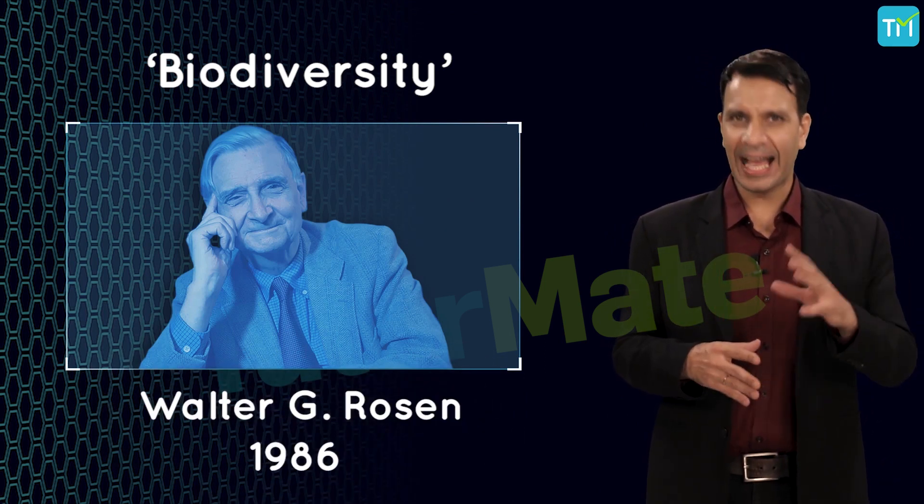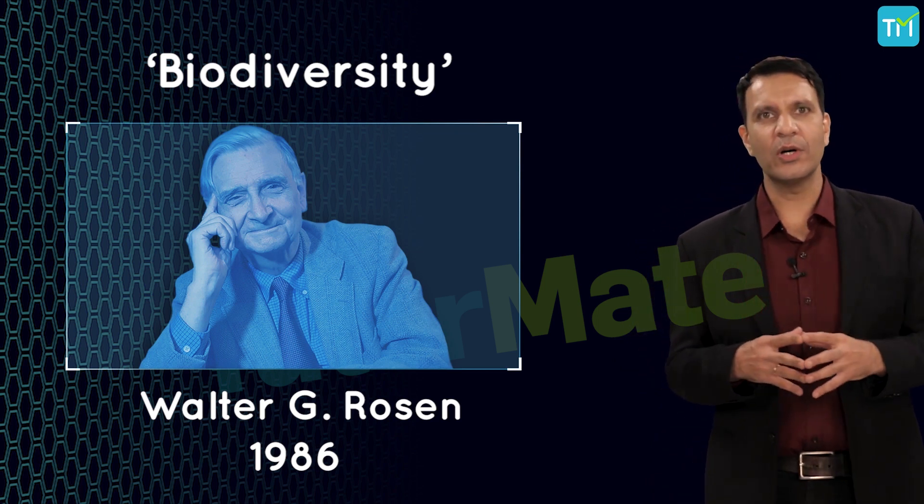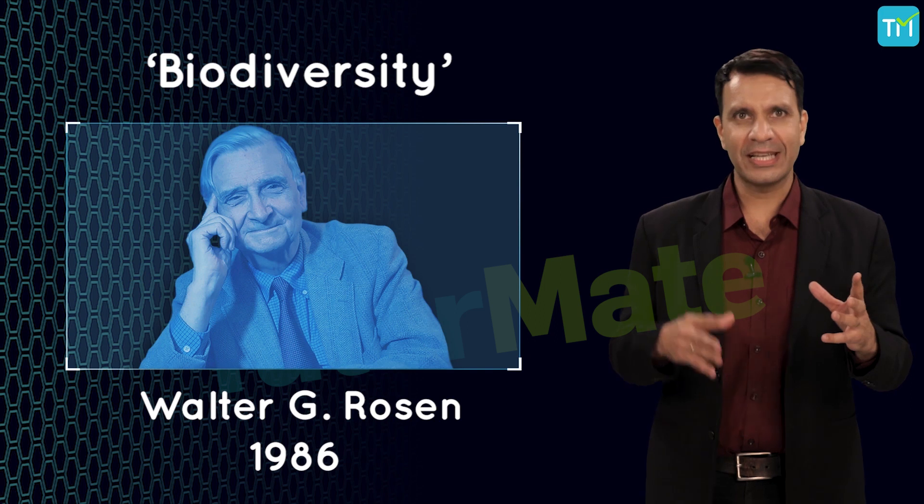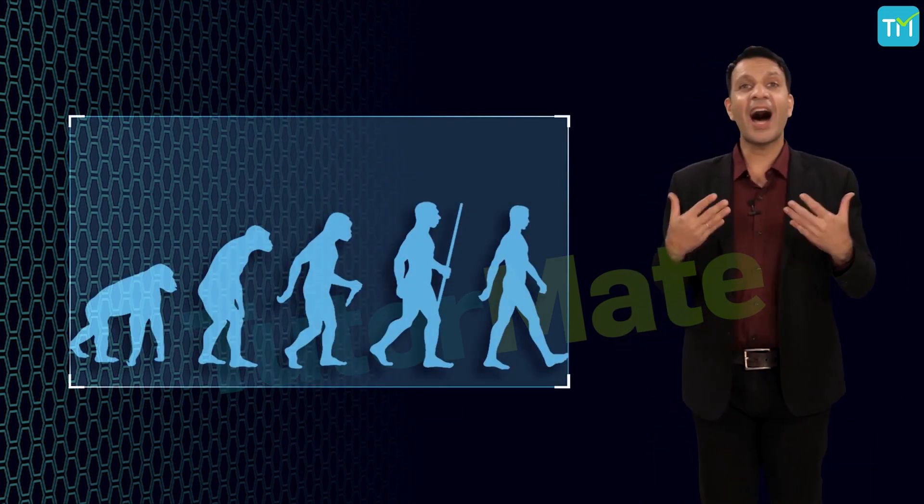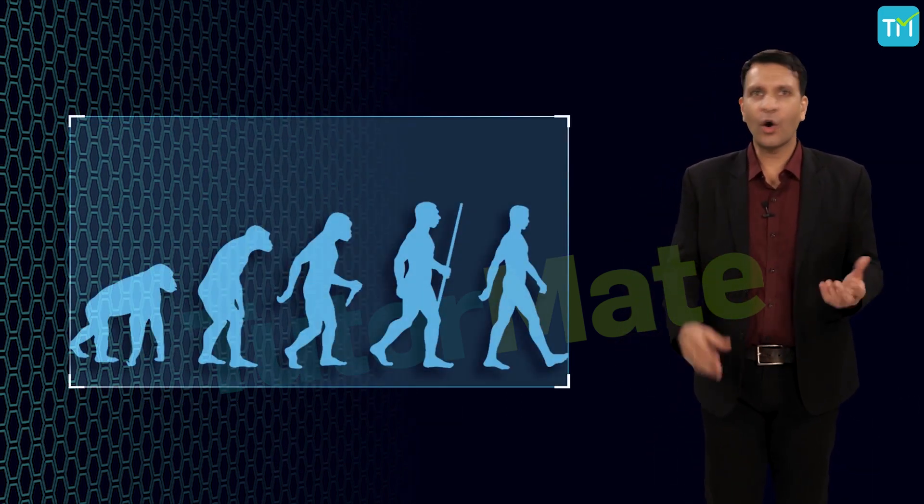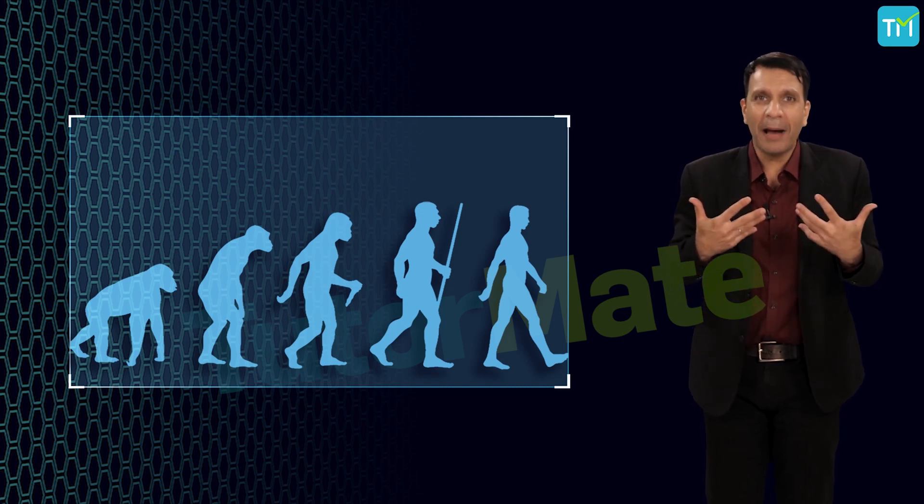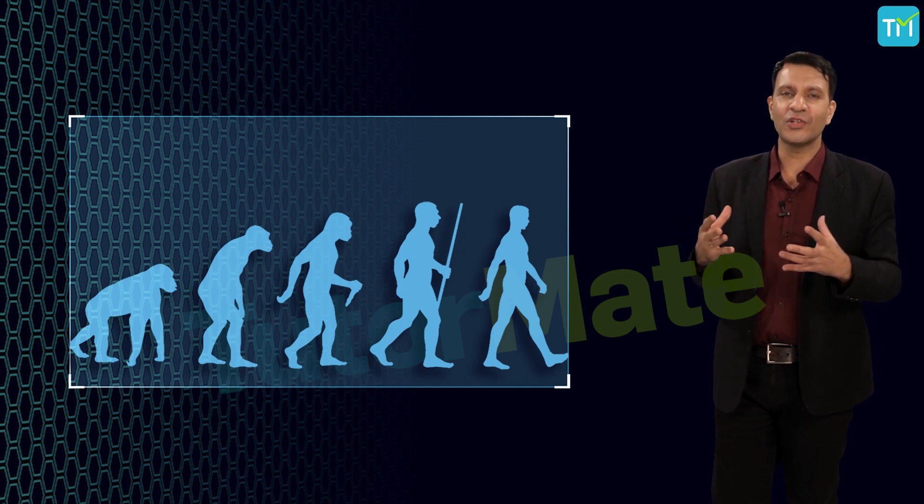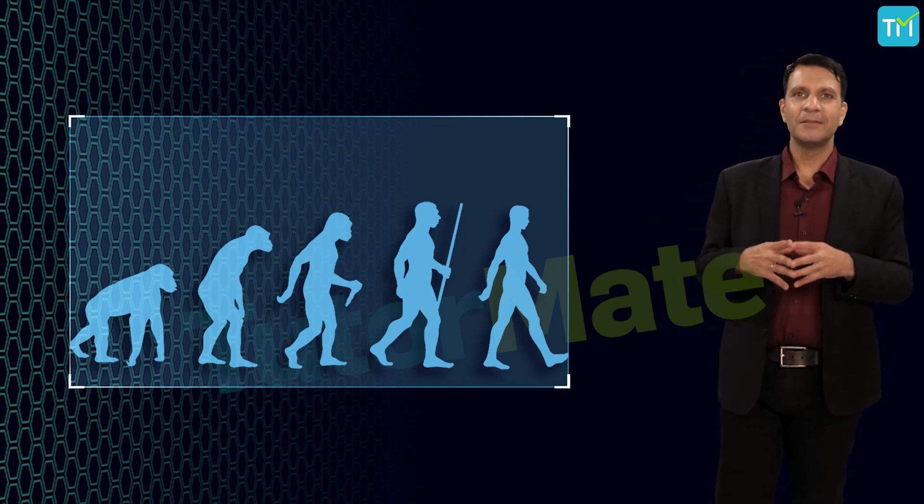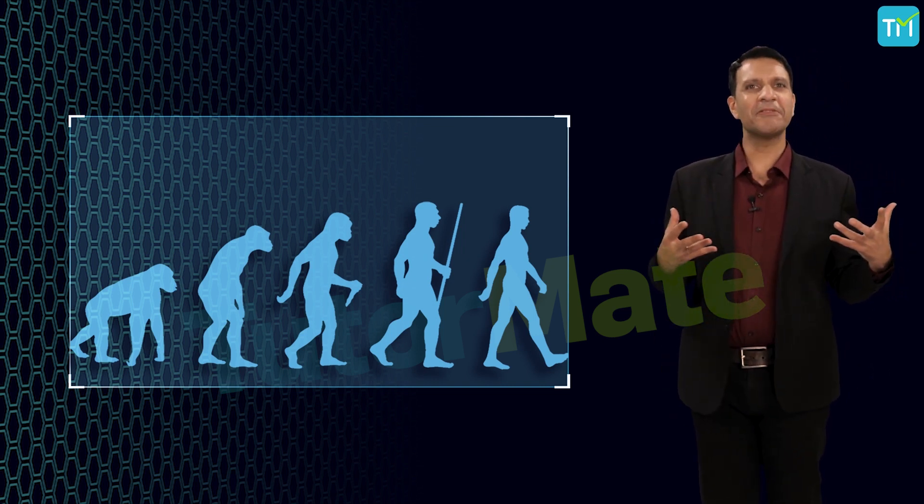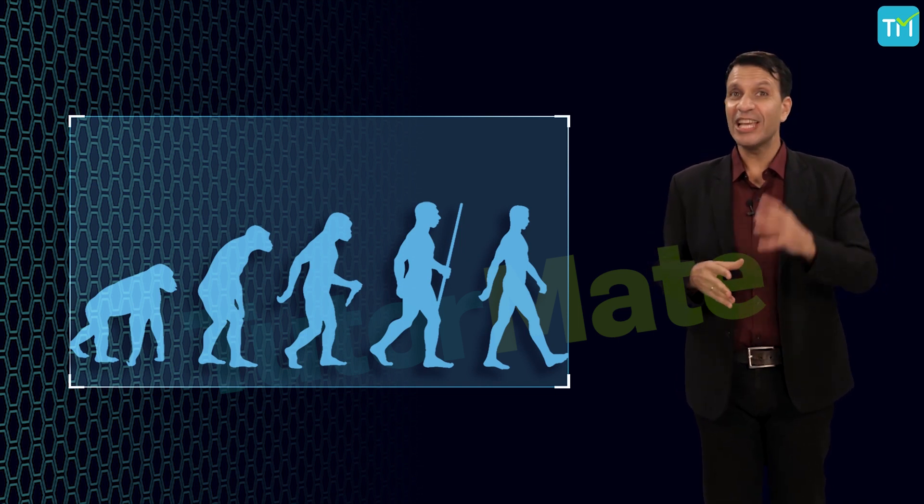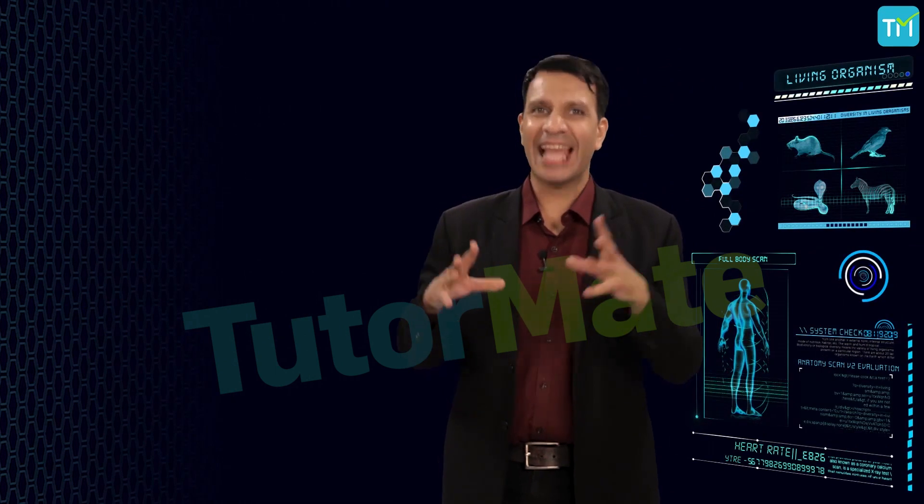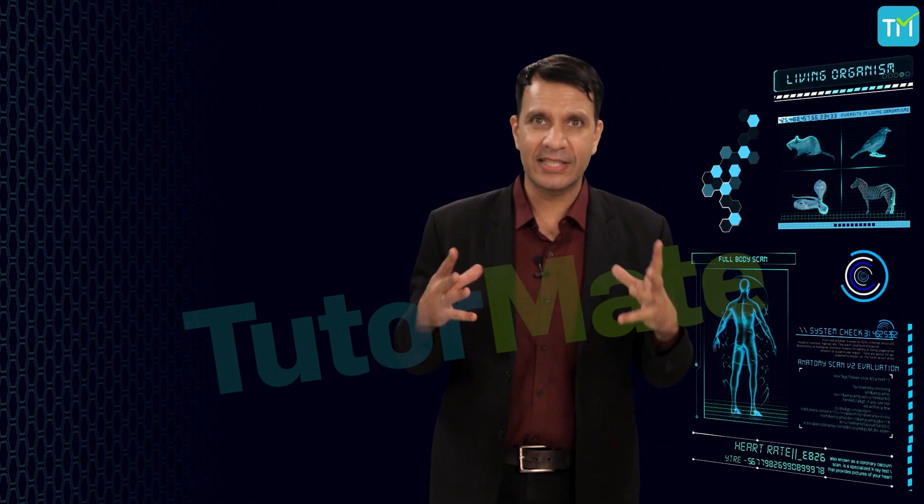Our ancestors walked on all four limbs, their spines arched like a bow to withstand the weight of the organs suspended below. But then we stood up, and that caused the change in other subsequent body design. So this means that the characteristics that came into existence earlier are likely to be more fundamental than characteristics that came into existence later.